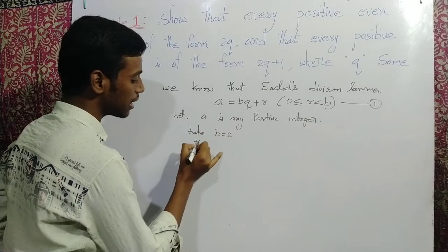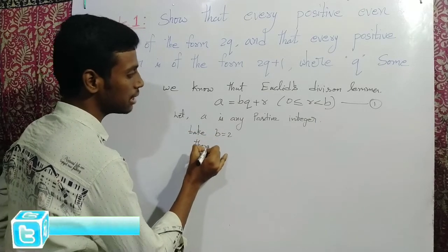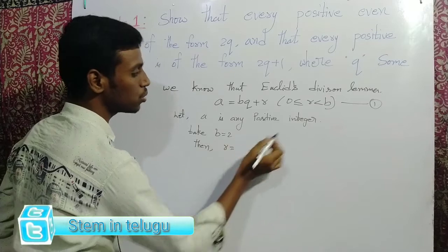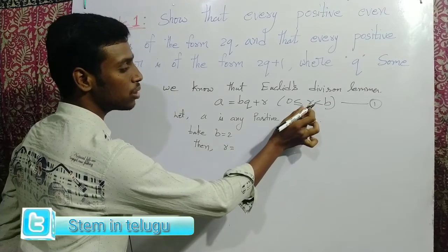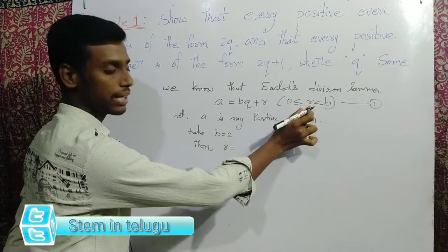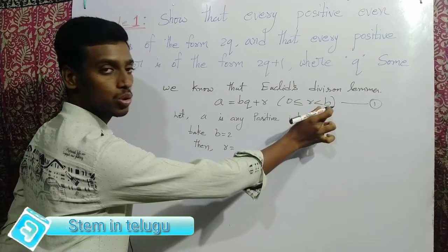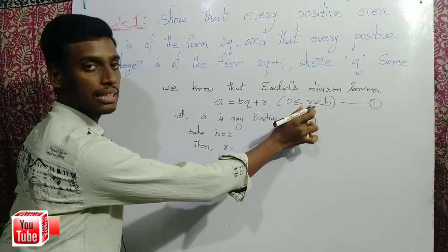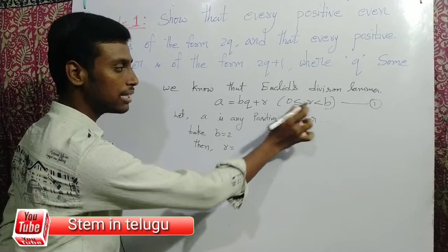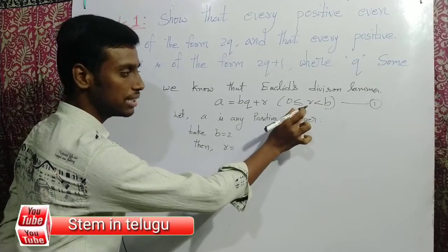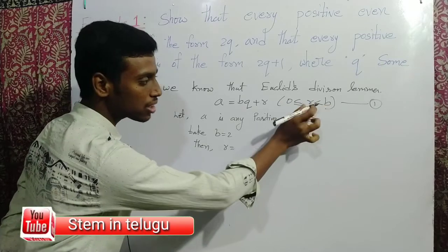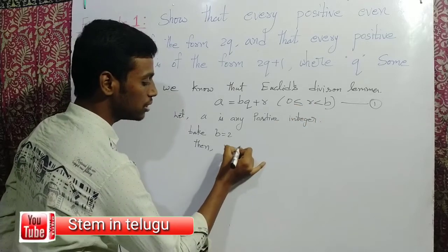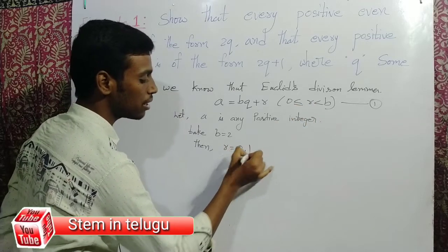Then r can take values: since we put b equal to 2, r is equal to 0 or 1. Because r must satisfy 0 less than or equal to r less than b, which is 2. So r is 0 or 1.